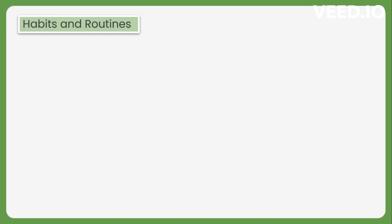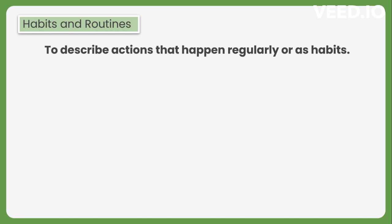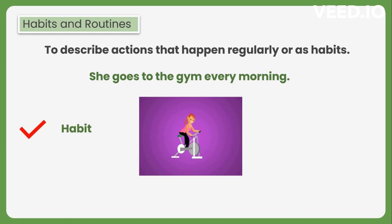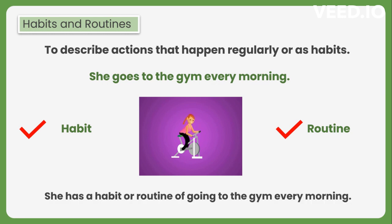First of all, habits and routines. We use simple present tense to describe actions that happen regularly or as a habit. For example, she goes to the gym every morning. It means that she has a habit or routine of going to the gym regularly, specifically every morning. This sentence describes a habit, a routine. Therefore, we use simple present tense, as it simply states a recurring activity that happens as part of her routine.